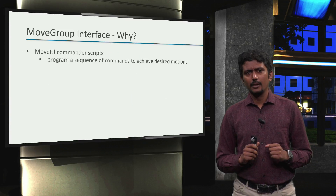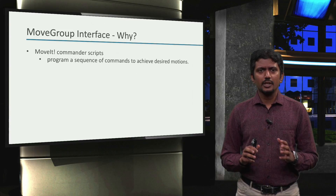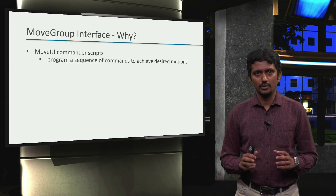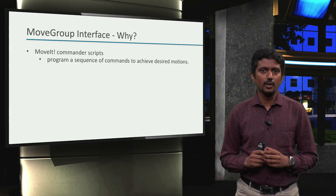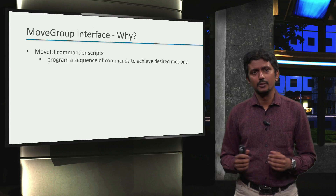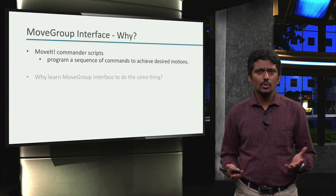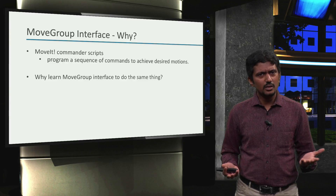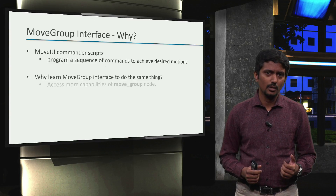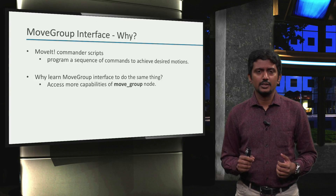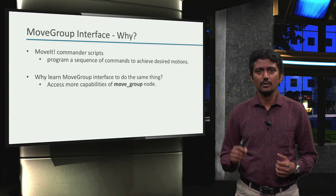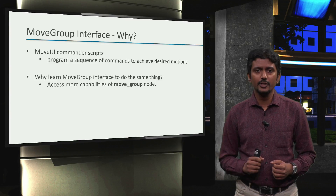We also learned that we can write moveit commander scripts to program a sequence of commands to our robot arms, which could also be a sequence for pick and place motions. So why do we need a different way to do the same thing? Well, first, we can access more capabilities of the movegroup node instead of just relying on the limited set provided by moveit commander.